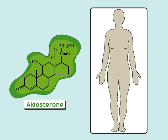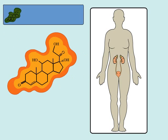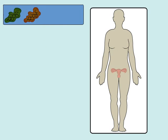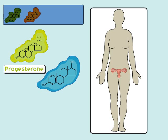Adrenal aldosterone, a major mineralocorticoid, is essential for the regulation of sodium balance in the kidneys. Cortisol, the primary human glucocorticoid, is also secreted by the adrenal glands and is essential in the regulation of metabolic activity of the liver, muscle, and fat tissue, as well as the body's response to stress.